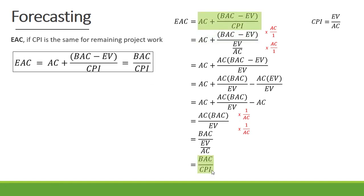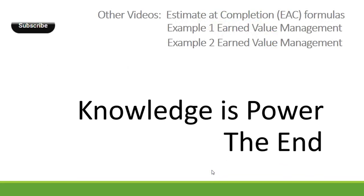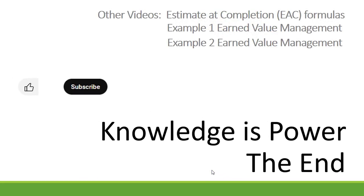So if the CPI is the same for the remaining project work, then the estimate at completion can be calculated as actual cost plus budget at completion minus earned value, divided by CPI — which simplifies to budget at completion divided by CPI. I hope this video helped you to better understand where the formula estimate at completion equals budget at completion divided by CPI comes from.